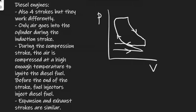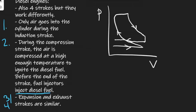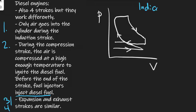Diesel engines also have four strokes but work differently. During induction, only air enters the cylinder. During compression, the air is compressed to a high enough temperature to ignite diesel fuel — there are no spark plugs; instead a fuel injector injects diesel which ignites due to the high temperature. The expansion and exhaust strokes are very similar. The indicator diagram looks similar but lacks a sharp pressure peak, with a flat section at the top.